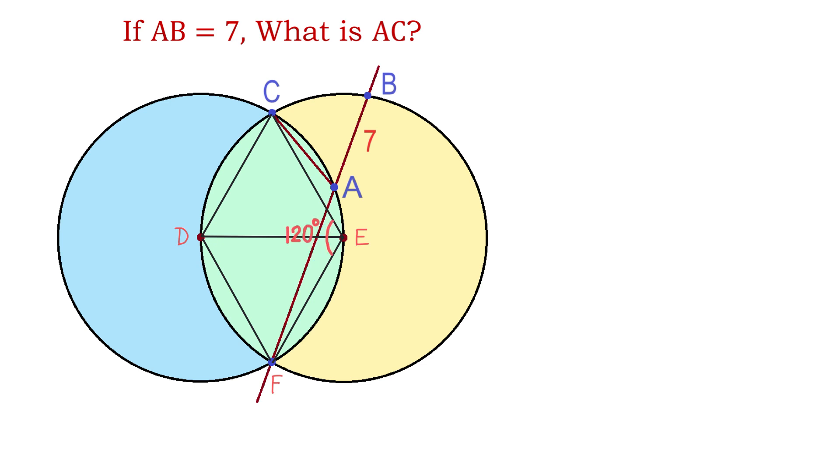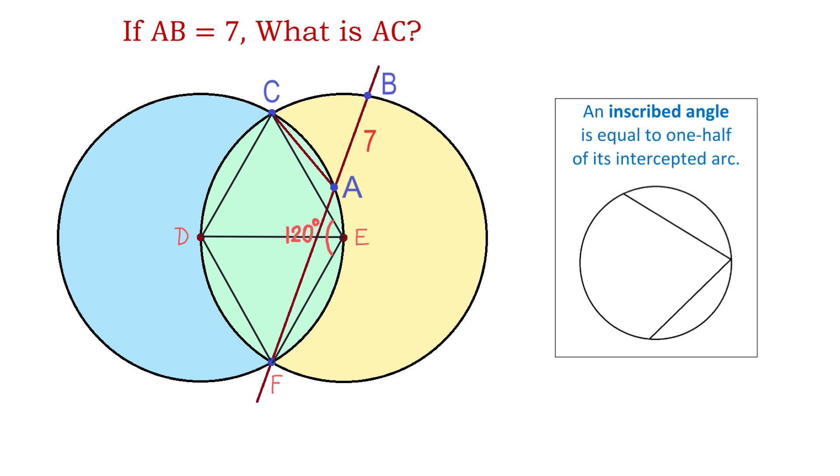In the next step, let's use the geometry principle for inscribed angles. To the right, we have an example of an inscribed angle, and by definition, an inscribed angle is an angle whose vertex is on the circle, and the sides are two chords.